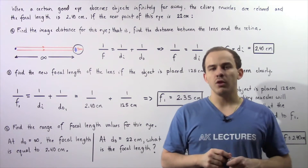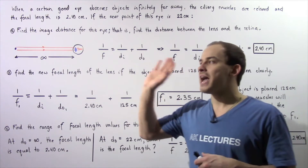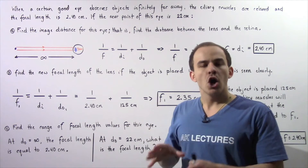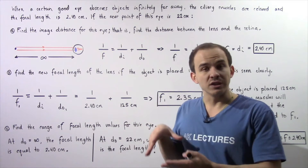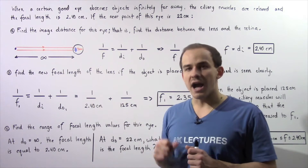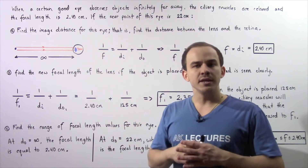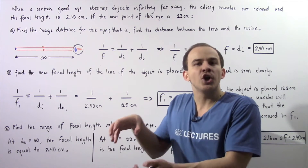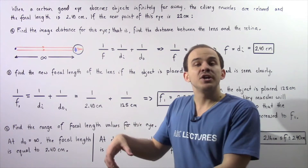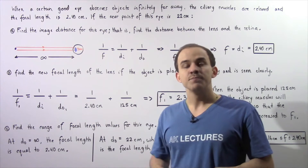The human eye works in the following manner. When an object is found an infinite distance away, that is, very far away, the ciliary muscles holding the lens are fully relaxed, and the lens is relaxed, so the focal length is at a maximum. However, when we bring the object closer to the eye, the ciliary muscles contract and that increases the curvature of our lens, and the increase in curvature basically decreases the focal length of that lens.